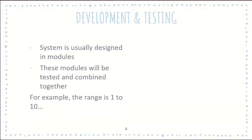Within development and testing, system will usually be designed in modules and then these modules will be tested and combined. The client sees whether everything is working and what changes they would like to make. With this there are different types of data checks. For example if you have a range from 1 to 10, we have normal data when you enter number 3, 4, 5, 6, 7, 8, 9, or 2, that would be considered normal data.